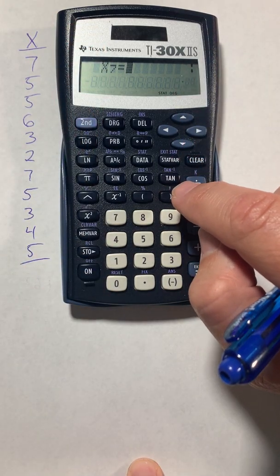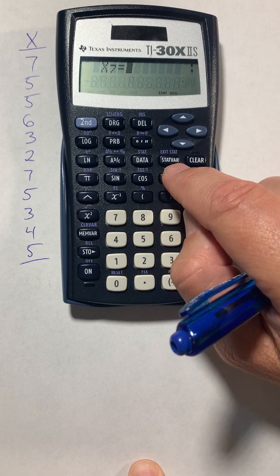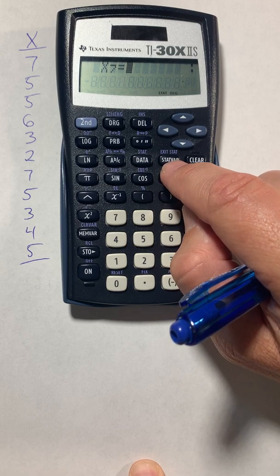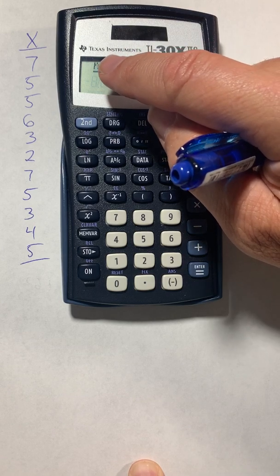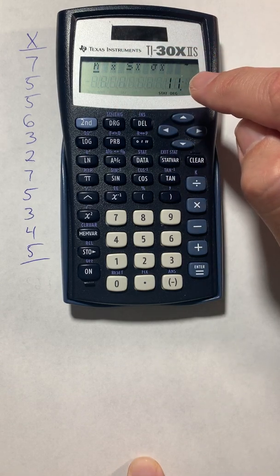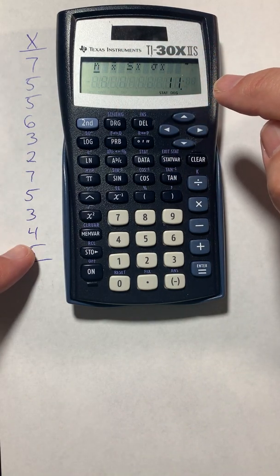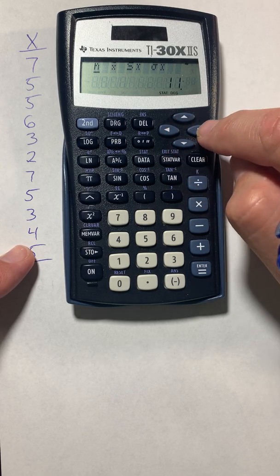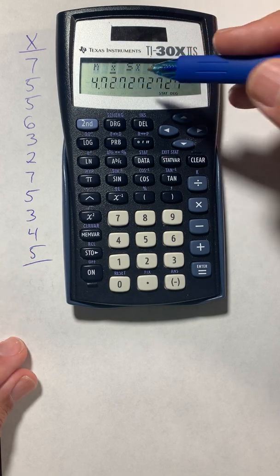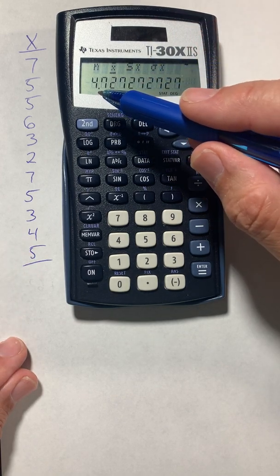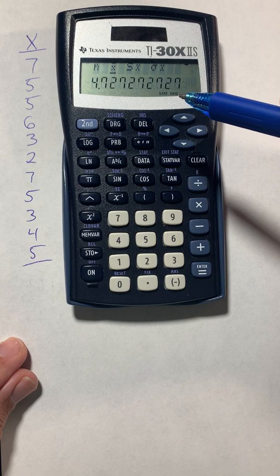The stat var button does all of the calculations. Notice it says N and the N is 11. And there are in fact 11 numbers in my data set. Using the cursor keys, I can move over. That's an X bar, which means the mean. The mean for this data set is 4.73 with rounding.